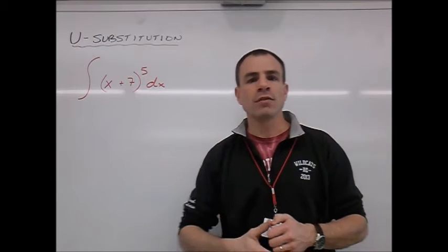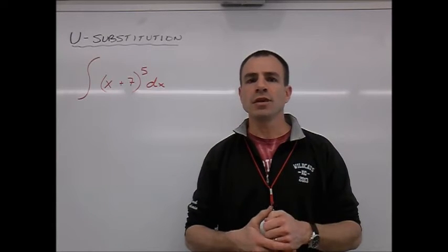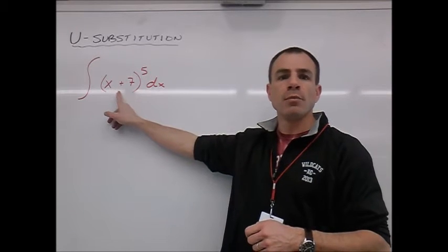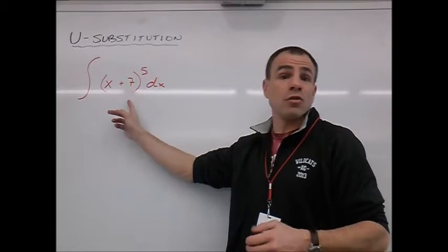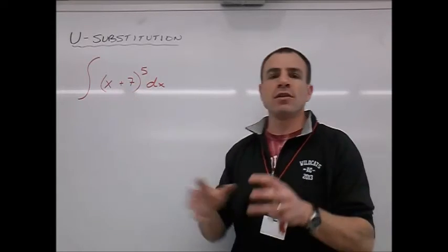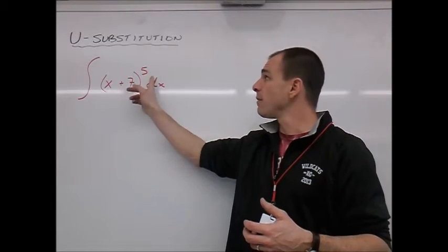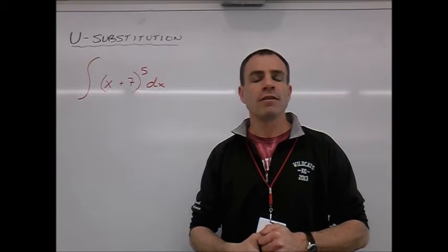But this exponent of a 5 really throws a monkey wrench into things. The issue here is that we can't just say, let's make this x squared over 2 plus 7x to the sixth over 6. We're not quite sure what to do because we don't have x to the fifth. We have an expression to more than x to the fifth power.